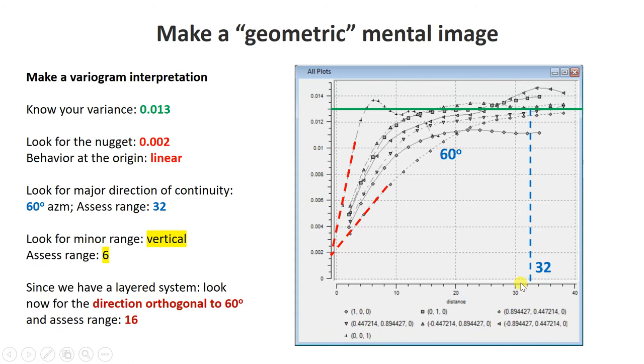Since we have a vertical system, look at the vertical variogram, which has the shortest range as expected - around six. Since we have a layered system, the next one to look at in your ellipsoid is the median of the axis. I talked about A, B, and C in the lecture - A being maximum, B being median, and C being minimum. It's logical to look at this variogram, directional orthogonal to 60 degrees, which is 150 degrees. There we find a range of 16.